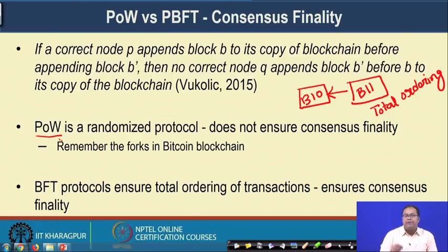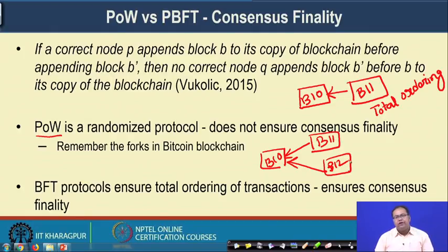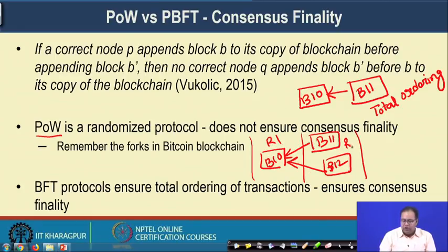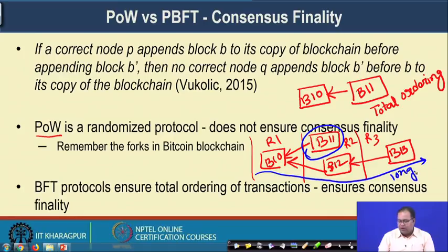If that happens, you have forks in the Bitcoin Blockchain. In a fork, after block B10, one miner appends B11 and another appends B12. If in the next round a miner appends block B13 after B12, then B11 becomes a fork and will never be used. You always use the longest chain as part of your Blockchain.